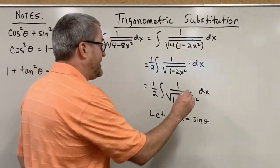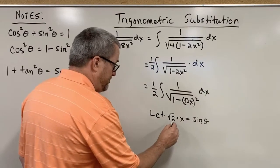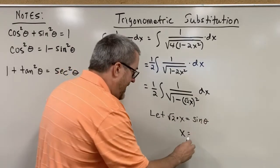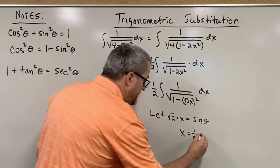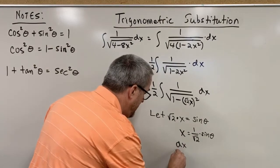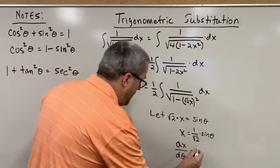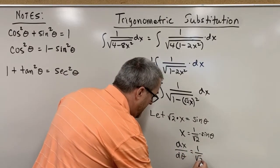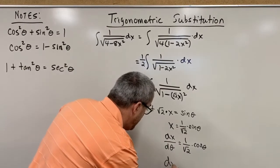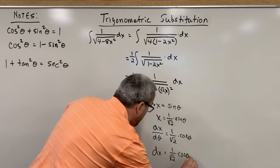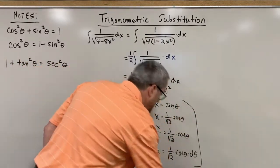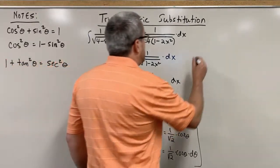But we do have to deal with the consequences, and we also have to deal with this dx. If the square root of 2 times x is equal to the sine of theta, then x is equal to — if we divide by the square root of 2, or multiply by 1 over the square root of 2 — we will get an algebraically equivalent statement. Now let's take the derivative. The derivative of x with respect to theta: the derivative of 1 over the square root of 2 times sine is 1 over the square root of 2 times cosine — the derivative of sine being cosine, of course. Therefore dx equals 1 over the square root of 2 times cosine theta times d theta.